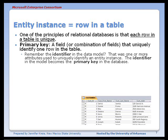So if you remember, in the data model we call that unique attribute the identifier. And so, the identifier in the model becomes the primary key in the database.